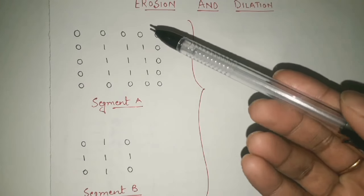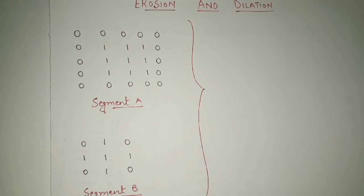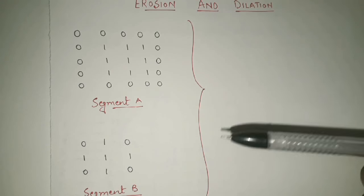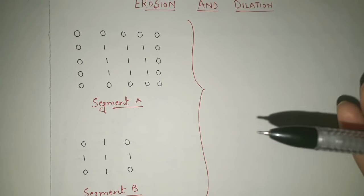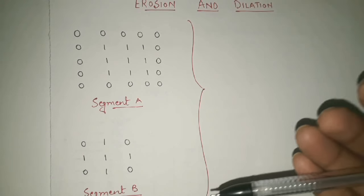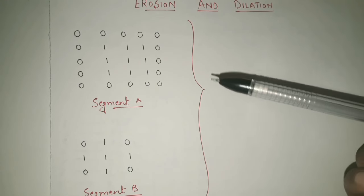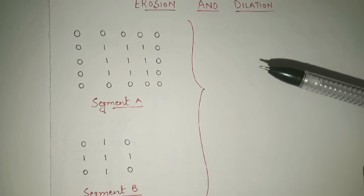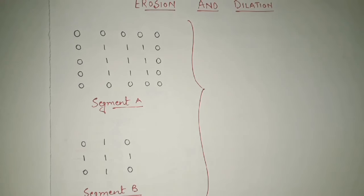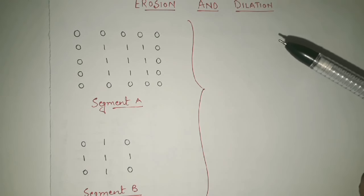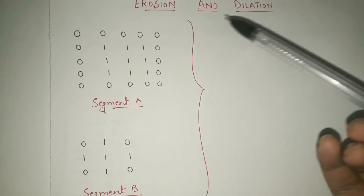In today's video we are going to see erosion and dilation in image processing. I have already uploaded one video on image processing — how to find out 8-path and 4-path — and I've been getting multiple requests for more videos on operations in image processing. So from now onwards I am continuing that series and uploading various techniques. Today we are here with two important morphological operations: erosion and dilation.